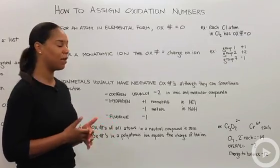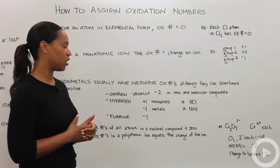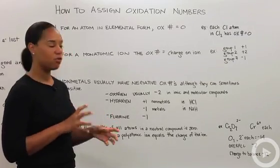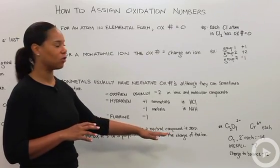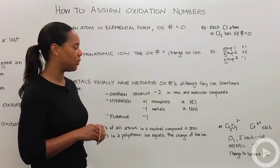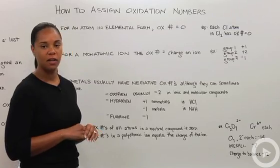And that the sum of the oxidation numbers in a polyatomic ion equals the charge of the ion. This last rule is probably going to be the most difficult to remember, so I put up a fairly complicated example just so that we can see how it kind of works.